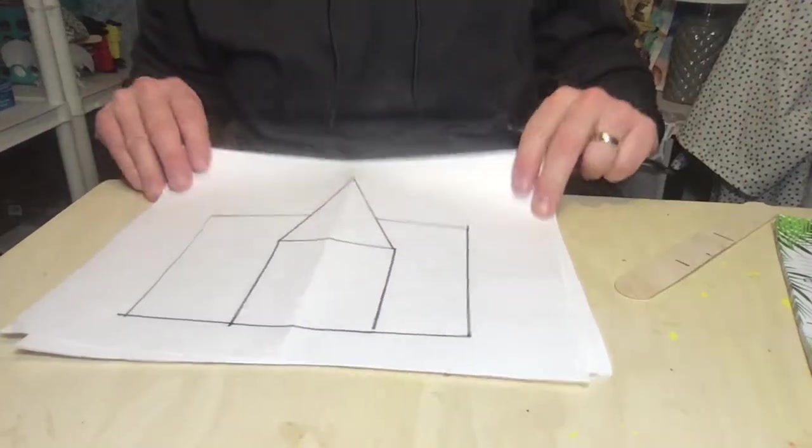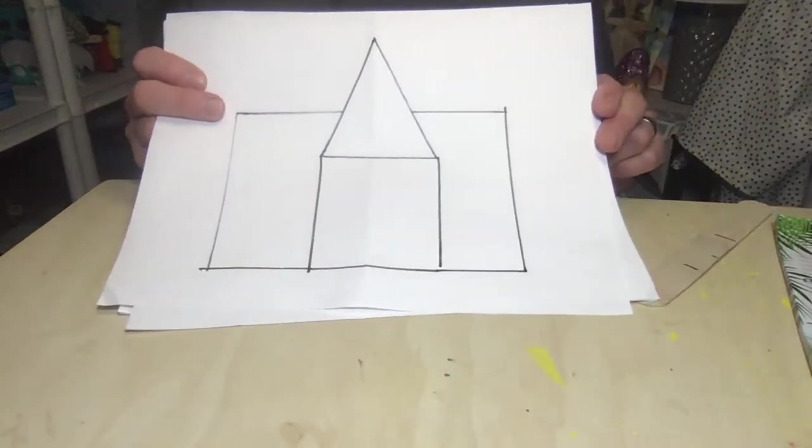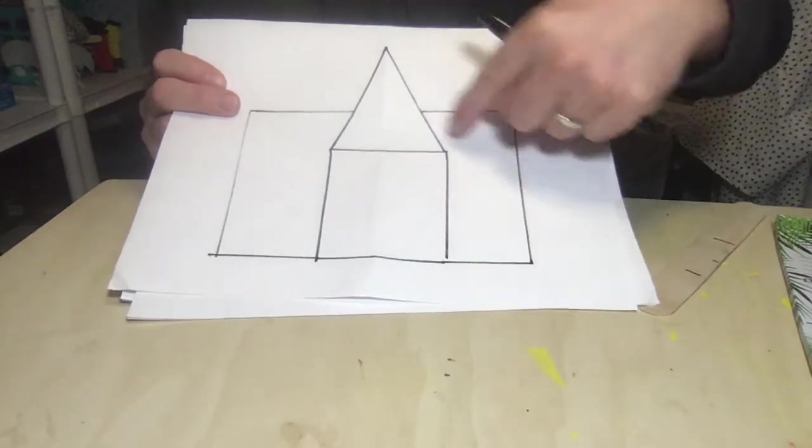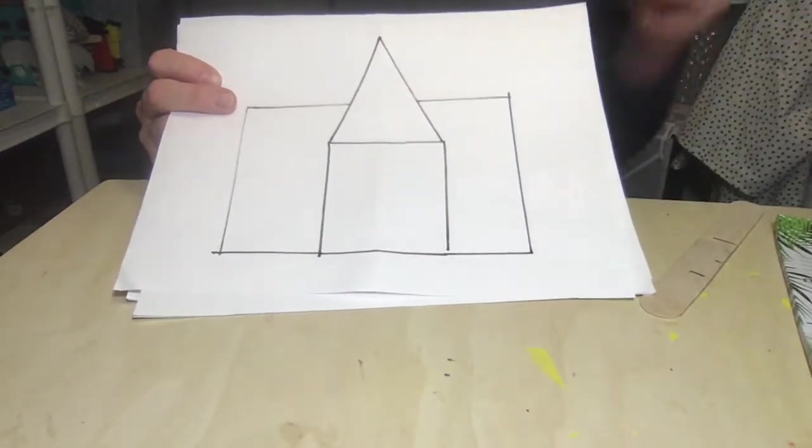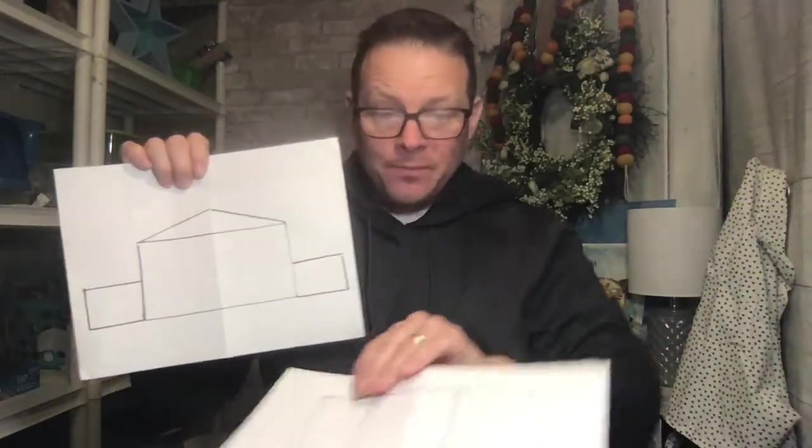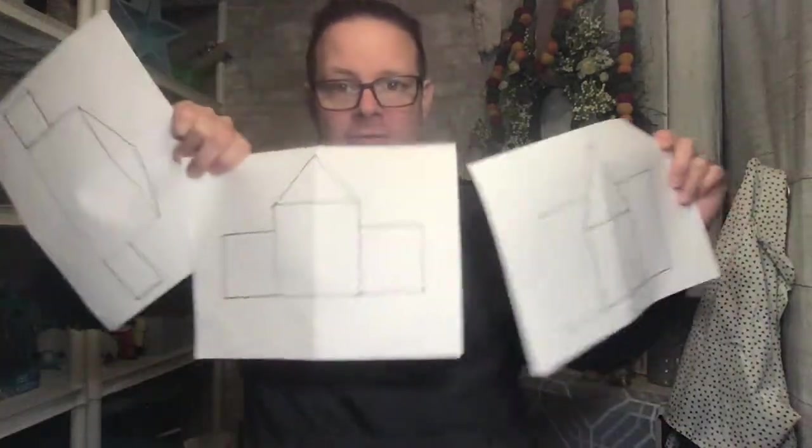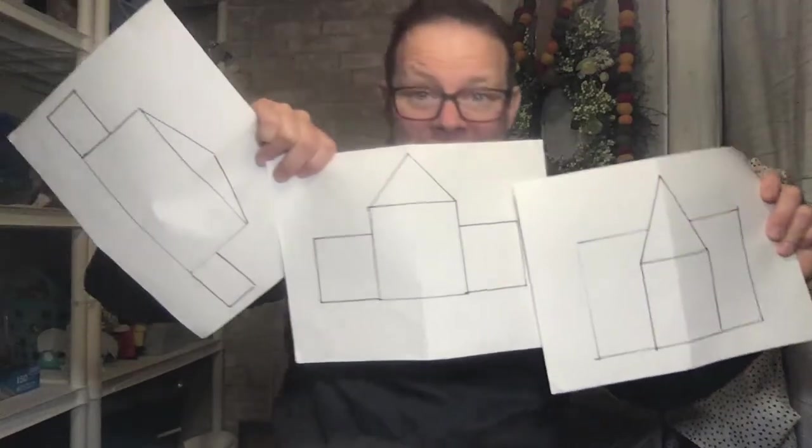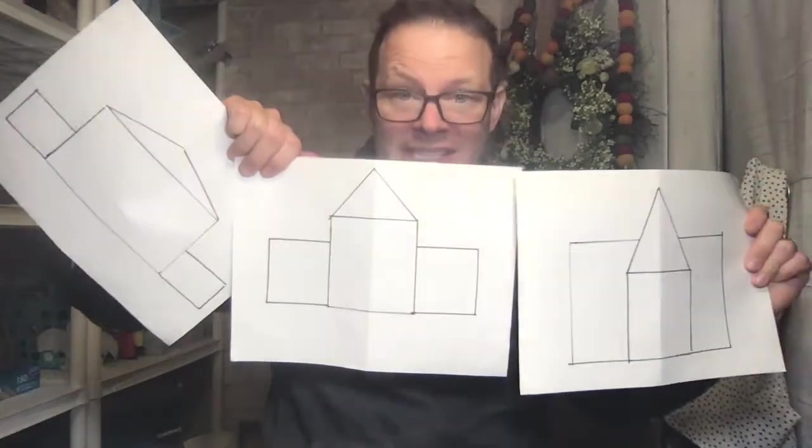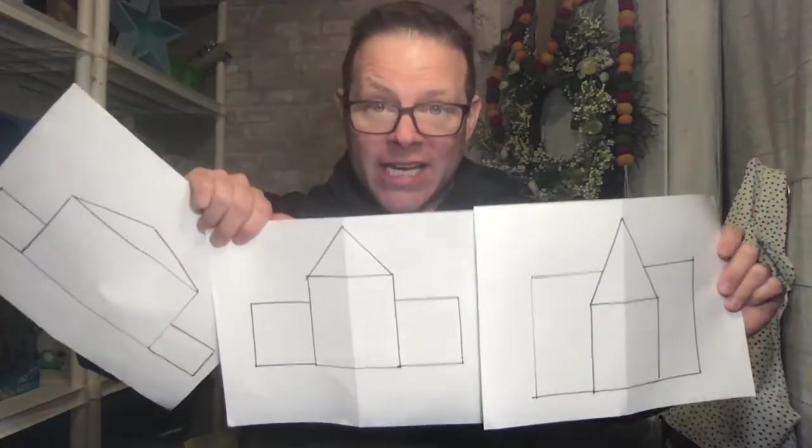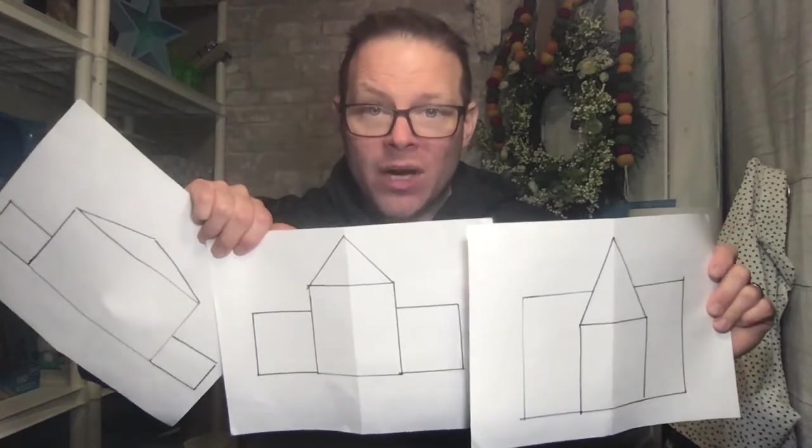There. So do you see how those two boxes now are behind this part? So house one, house two, and house number three right here. Same technique, but you can see the shapes are starting to change. Now there's one more thing I want you to do.